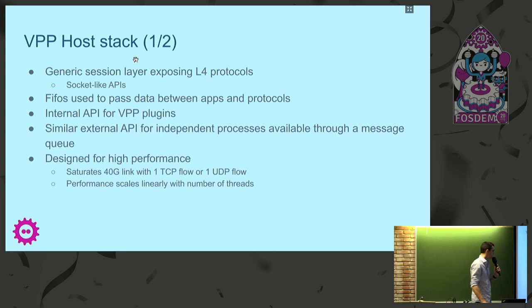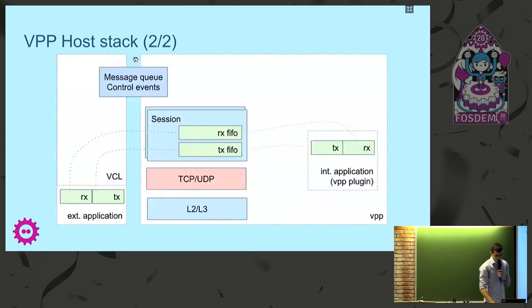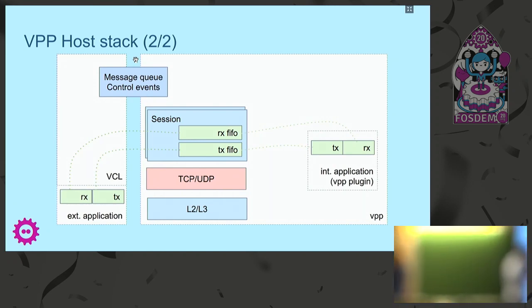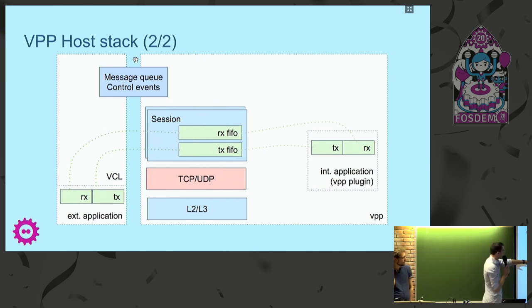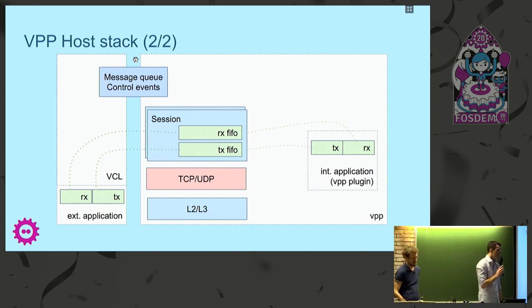It's built to scale linearly with the number of threads — different sessions are always assigned to a thread and are completely independent from each other. For a more visual overview of the host stack, we see the session layer in the middle, which exposes a standardized API over layer four protocols, the specific protocol implementation below it, and layer two and three networking. This session layer is consumable either internally with plugins or externally with control events going through the message queue, including connection events like new connection, connection closed, and data available on one of the FIFOs.